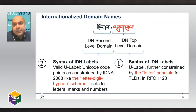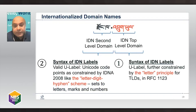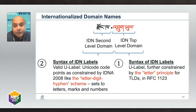Early on since domain names became available, communities across the globe have been asking for the ability to have domain names in local languages. The community worked on standards for this purpose. The first standard, normally referred to as IDN in Applications or IDNA, came out around 2003, which eventually matured to a second revision in 2008, known as IDNA 2008.